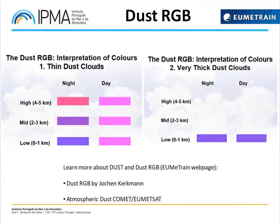Detection is also better at low sun angles — before sunset or after sunrise — where we can see the dust cloud better due to the forward scattering effect of dust particles. In the dust RGB, the main color is magenta, though different shades of pink and purple can occur depending on the environment, the underlying surfaces, and the level of the dust cloud. We can also get different information from the 10.8 micron channel. More about dust and the dust RGB is available at the EUMETRAIN webpage.